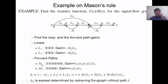There are two forward paths. The first forward path m1 goes from node one to two, two to three, three to four, four to five, and five to six — nodes 1-2-3-4-5-6 — with gain g1·g2·g3·g4·g5. The second forward path goes from node one directly to node four, then to five, then to six — nodes 1-4-5-6 — with gain g6·g4·g5.